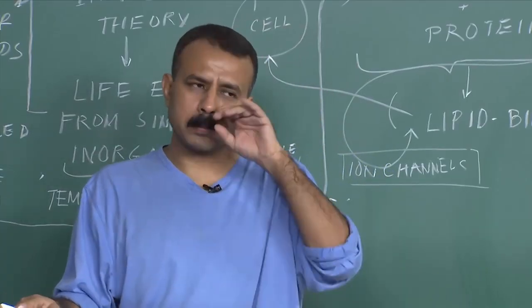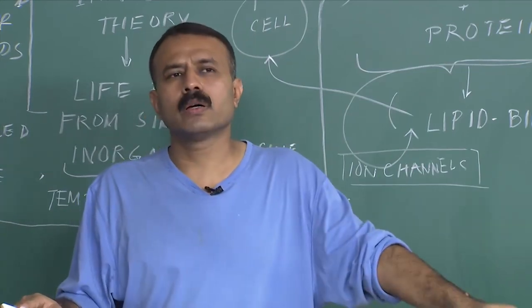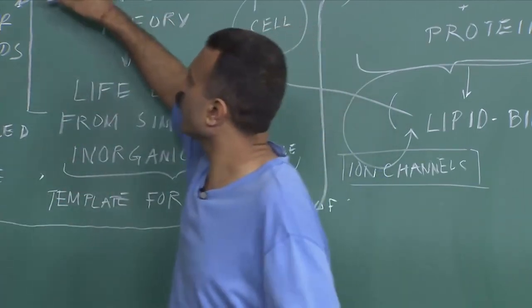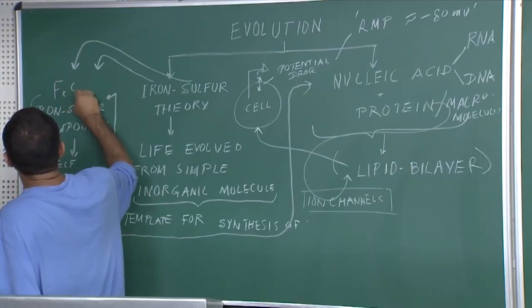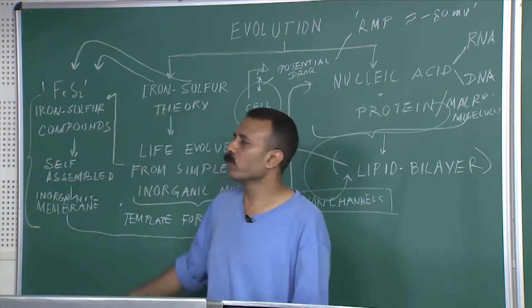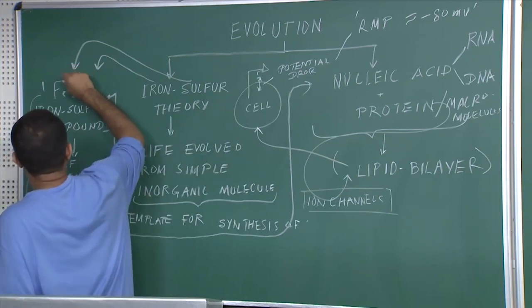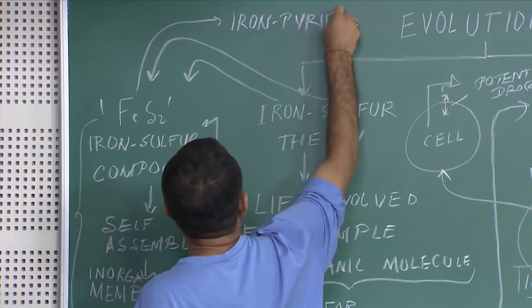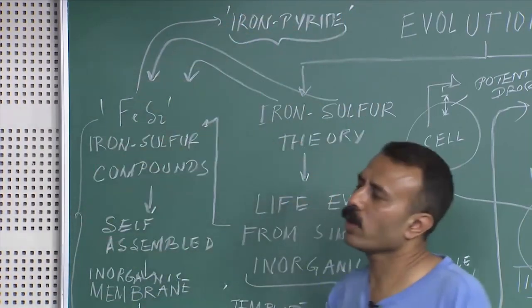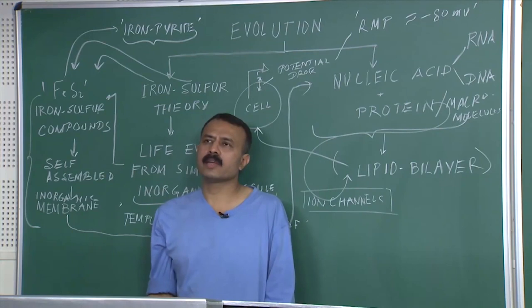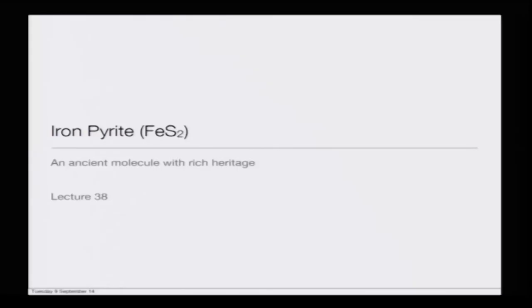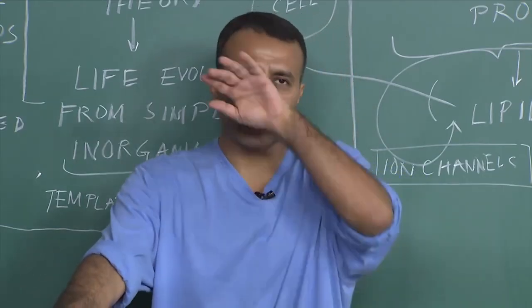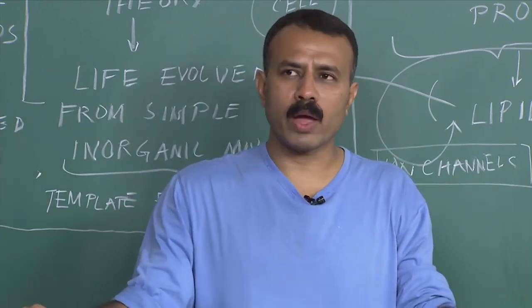One molecule which has remained in center stage of the iron sulfur theory is FeS₂, which is also commonly called iron disulfide or iron pyrite. Today's class will be on iron pyrite — an ancient molecule with rich heritage. I will expose you to iron pyrite and end the class with what the possibilities are and where we are heading.